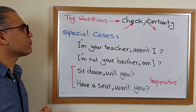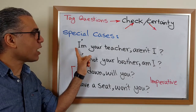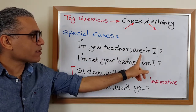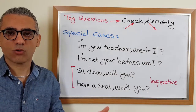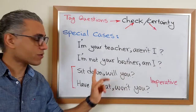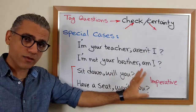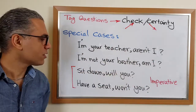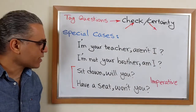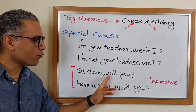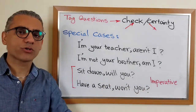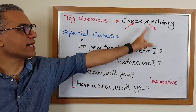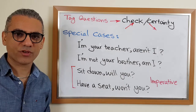We have some special cases for tag questions when you use 'I' and 'am' as your auxiliary verb. 'I'm your teacher' — in this case we say 'aren't I?' We cannot say 'am not I.' But the opposite works differently: 'I'm not your teacher, am I?' — that's fine. So if the sentence is negative, you can use 'am,' but if it's positive, you cannot. For imperative sentences: 'Sit down, will you?' or 'Sit down, won't you?' We can use either the positive or negative form. The intonation rules are the same as previously discussed.